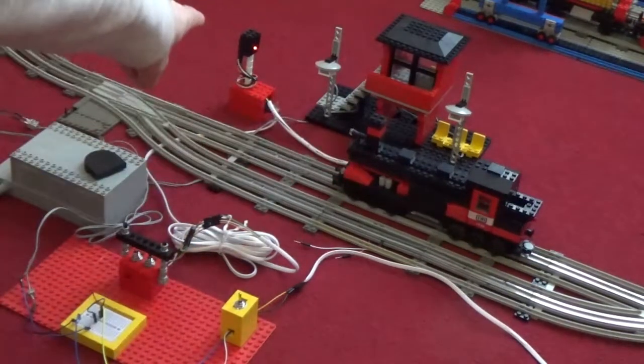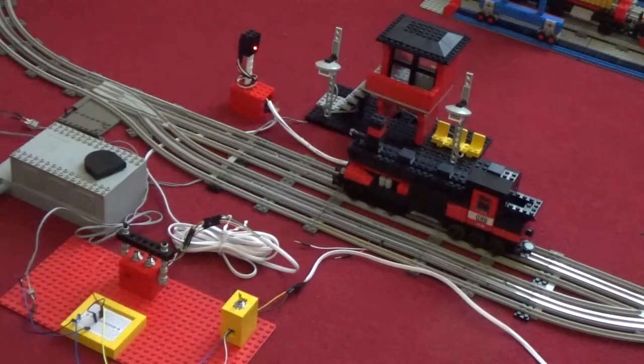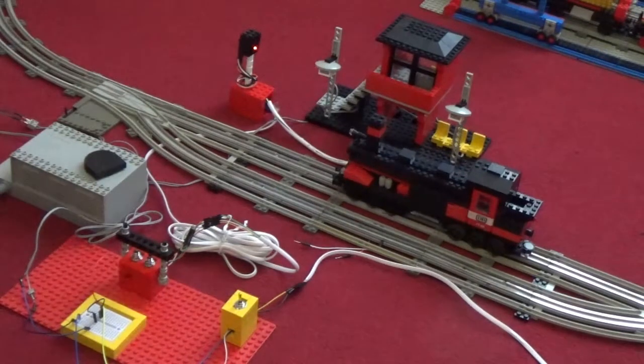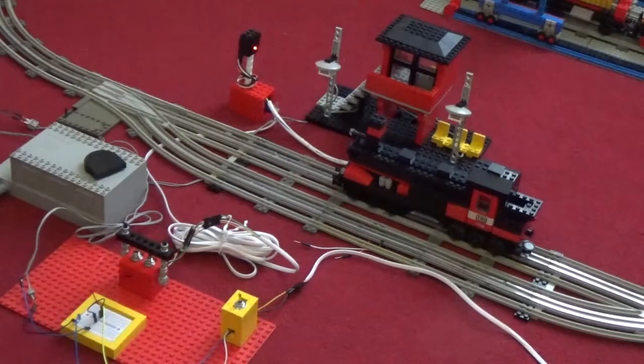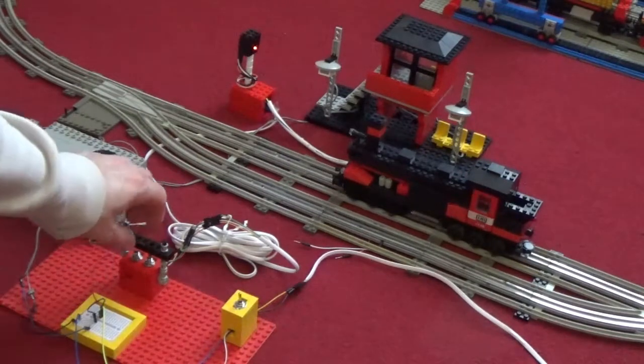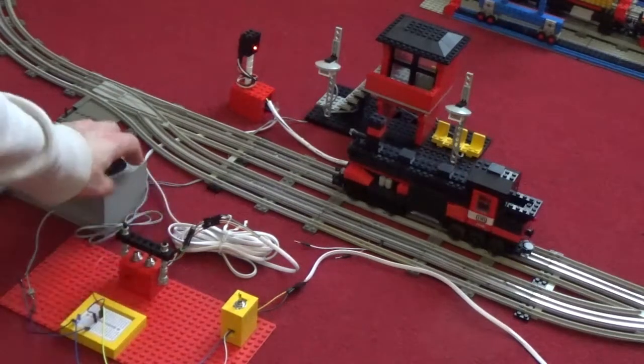What is supposed to happen is that the train is supposed to start moving and the light is supposed to turn from red to green. So let's do it and see what happens, three two one.